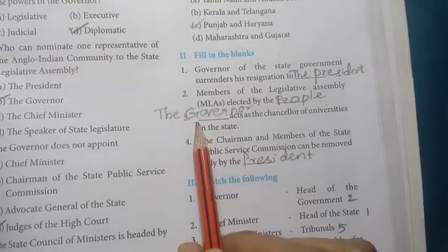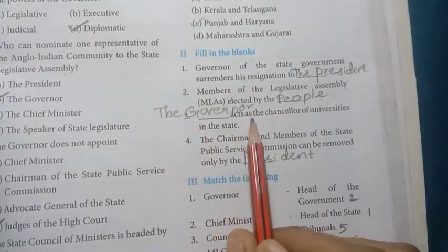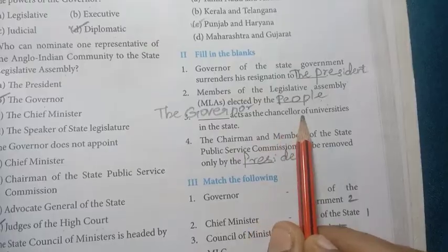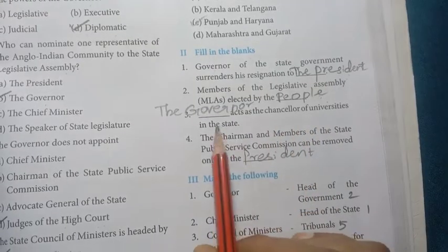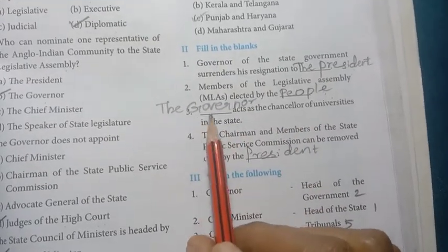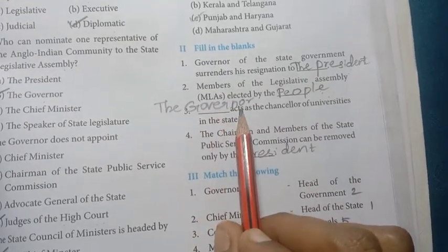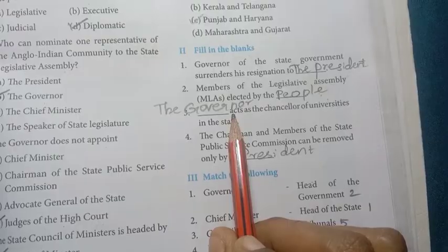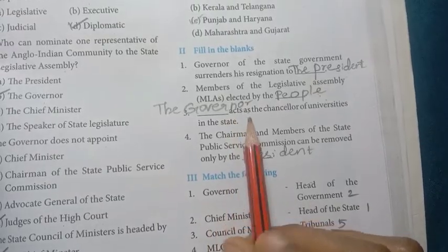Third one: the governor acts as the chancellor of universities in the state. The answer is the Governor – G-O-V-E-R-N-O-R.